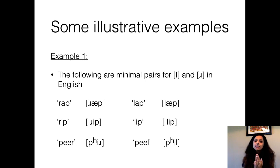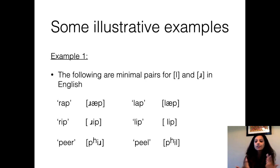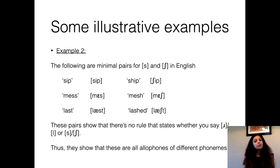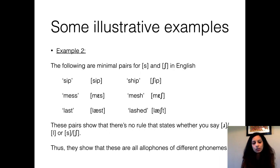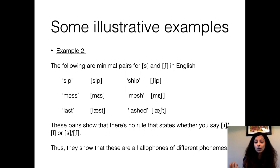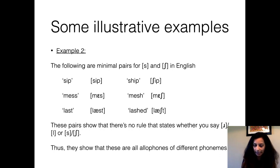For S and SH in English: 'sip' and 'ship' are minimal pairs because the only difference is in the onset position. 'Mess' and 'mesh' are minimal pairs because the only difference is in the coda position. 'Last' and 'lashed' are also minimal pairs with the difference being in the first position of a complex coda. We'll do many more exercises in the phonology lab section, where you'll get practice identifying and generating minimal pairs in English.